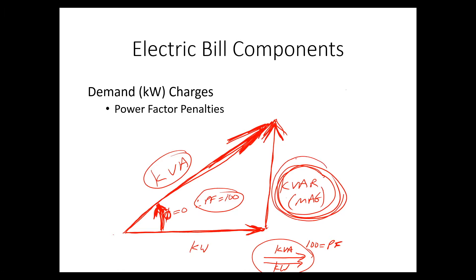Okay, so just to review, we need this KVAR, this magnetic energy, to basically start the motor. But once we get it started, we want to minimize this KVAR because it is basically making the utility do more work in supplying us KVA.